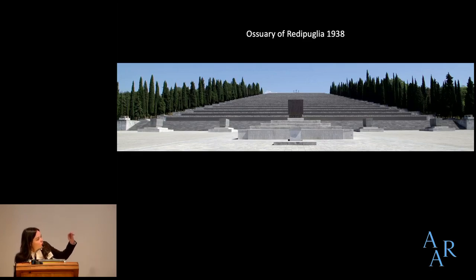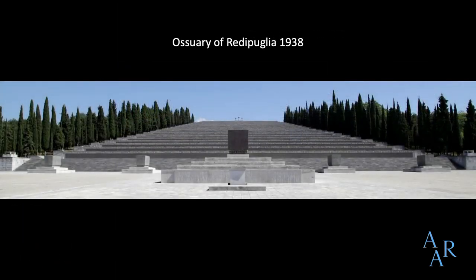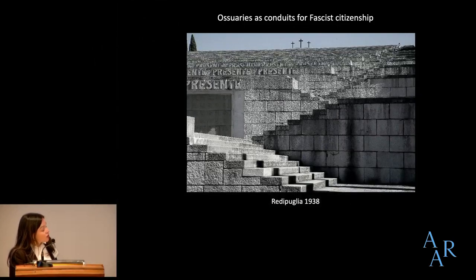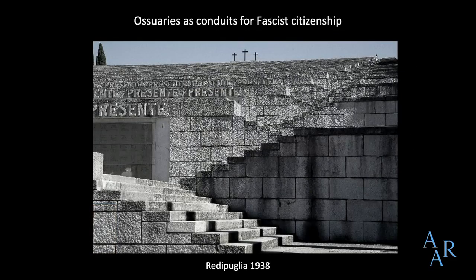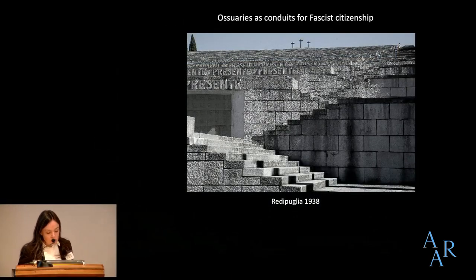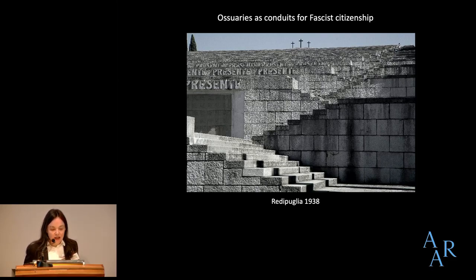Redipuglia is also a representation of Italian identity, or of what it means to be an Italian citizen. Amassed within small niches, the dead served as models for the good fascist citizen and as icons of the body politic. In this paper, I want to show how fascism reconceptualized citizenship in ways that had a major impact on Italy's political life, looking at the fascist ossuaries as places where civic identity was both expressed and embodied.